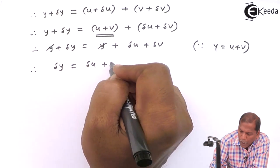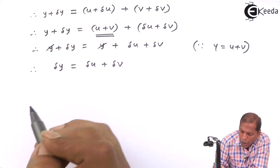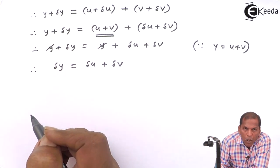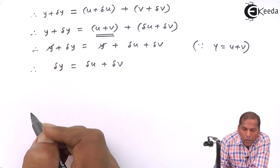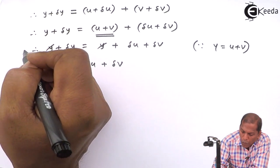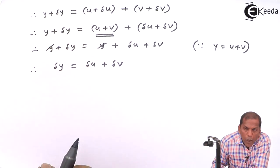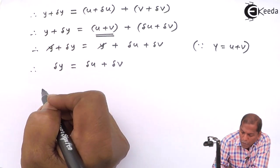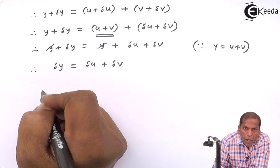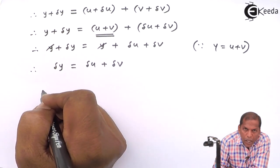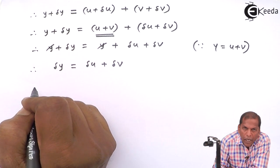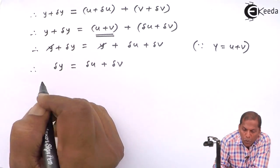Now differentiate with respect to x, that is, dividing both sides by Δx and taking limit as Δx tends to 0.